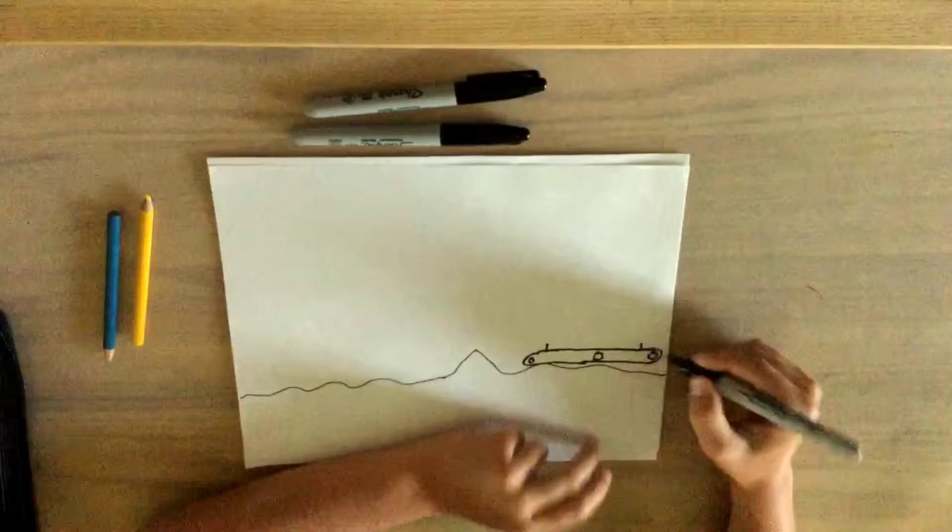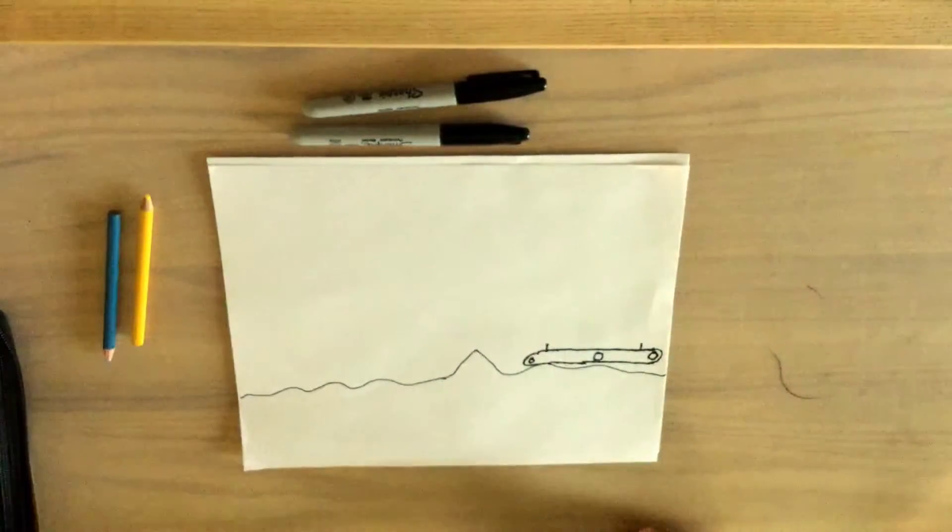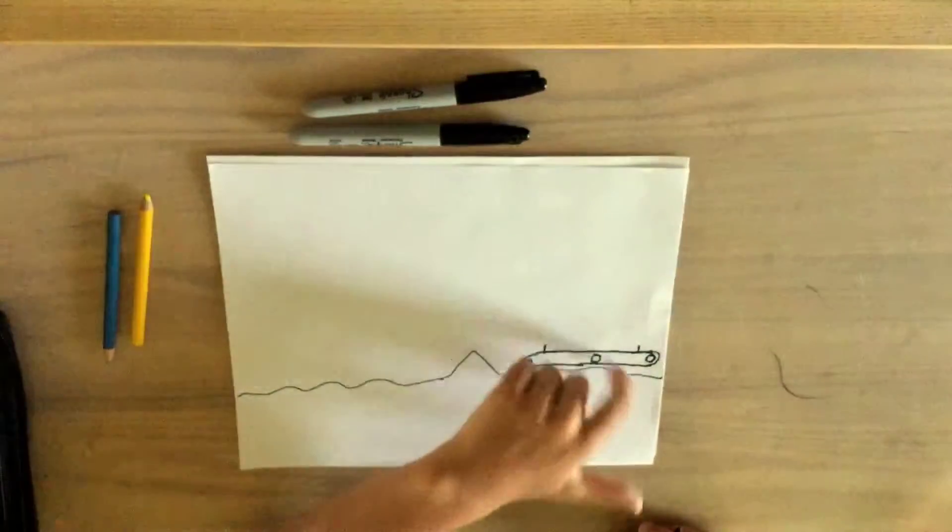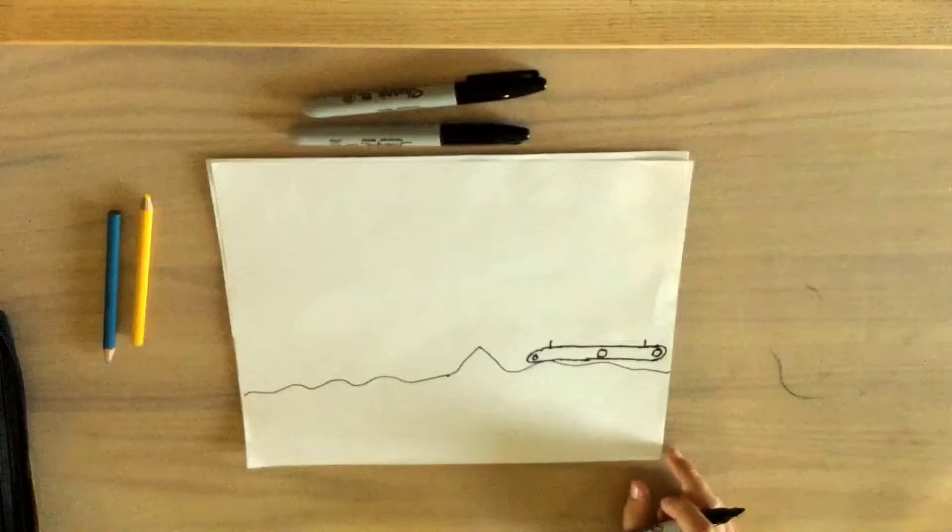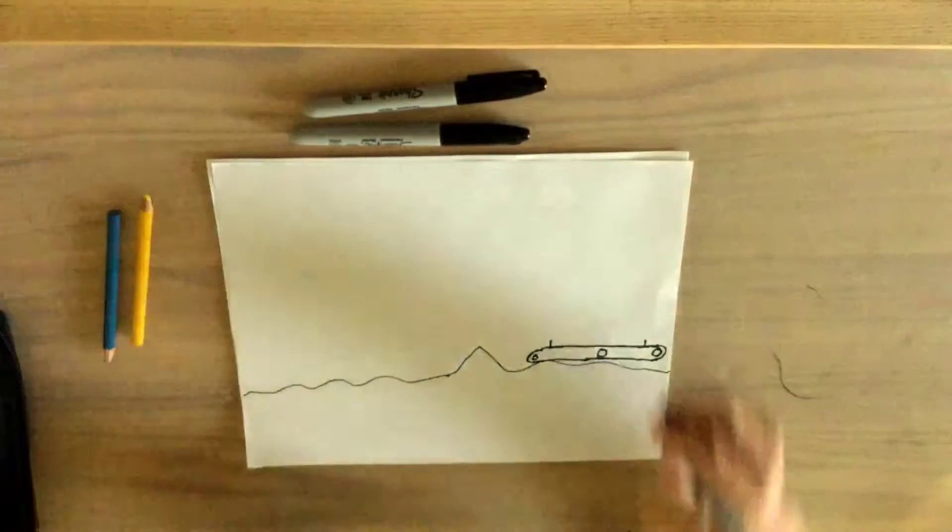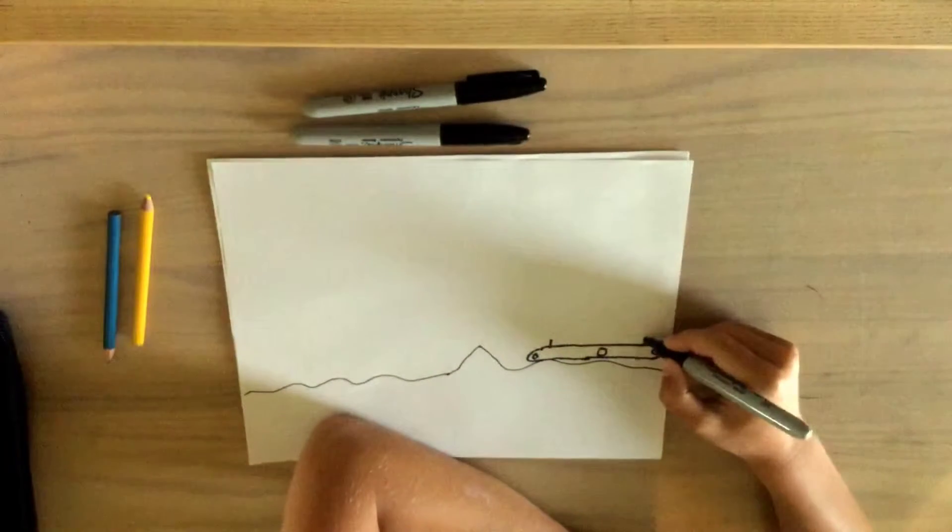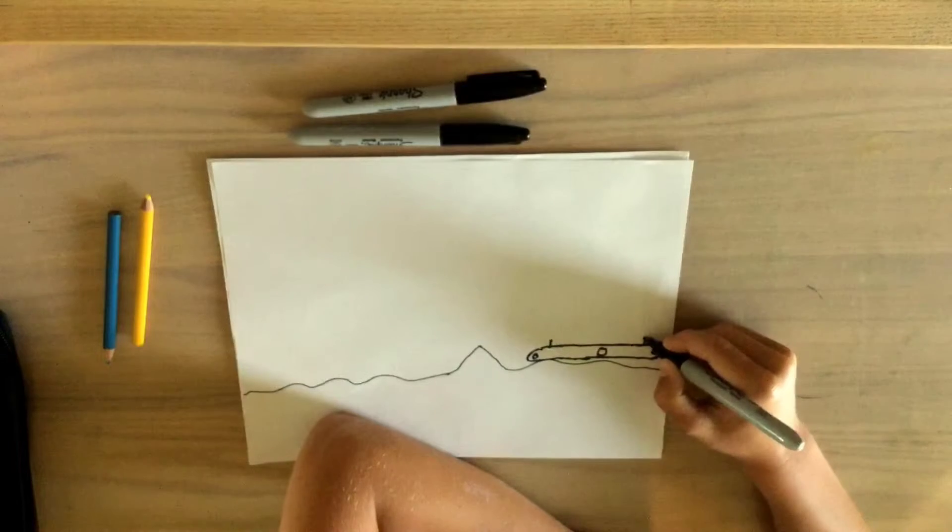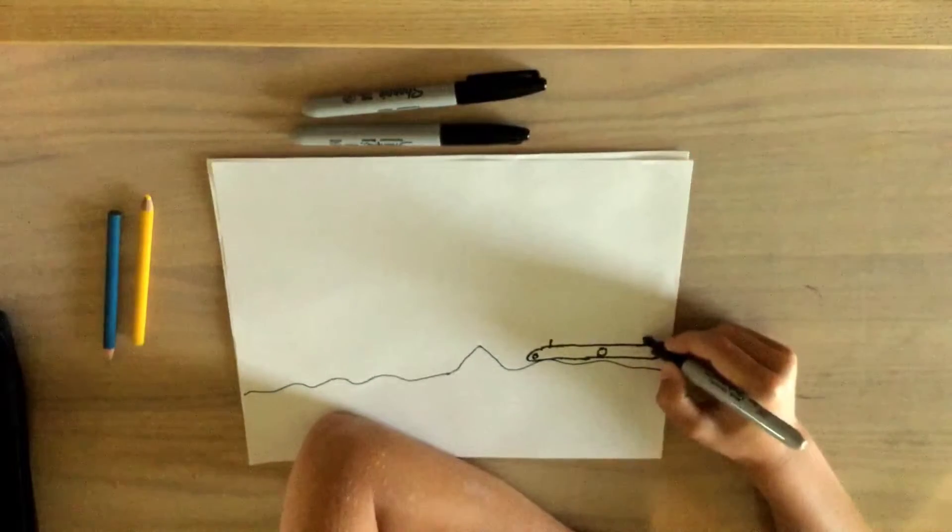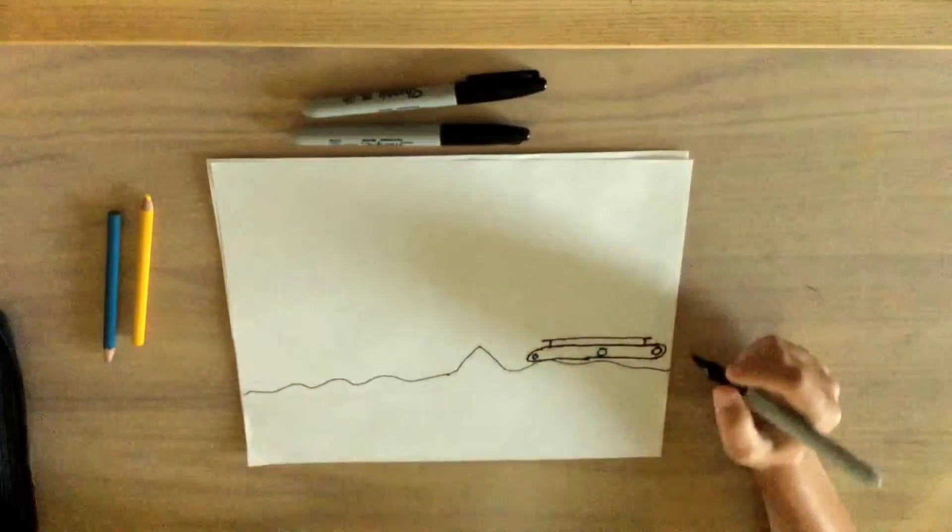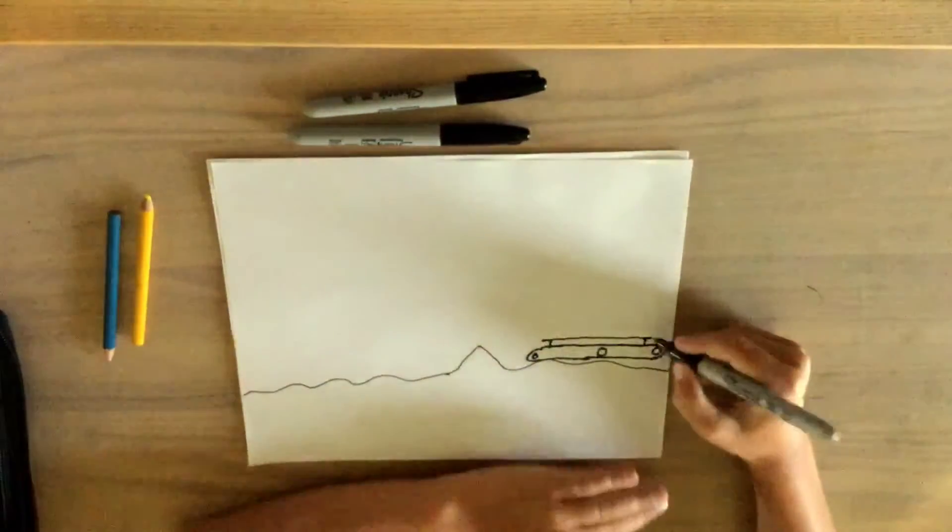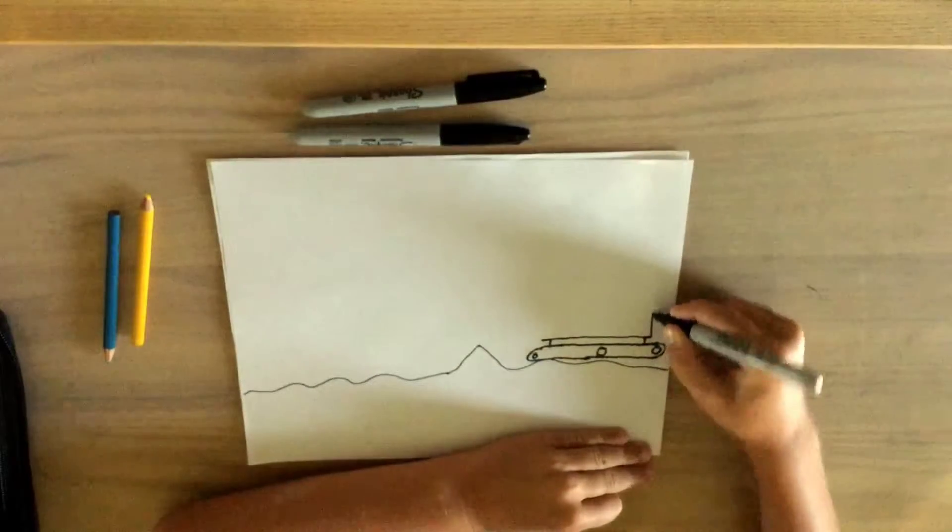Now we're going to draw two lines up like that. They're going to be going up from the tracks, whatever you want to call it, and then we're going to bring it out.